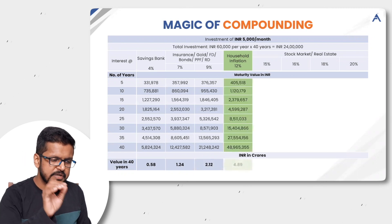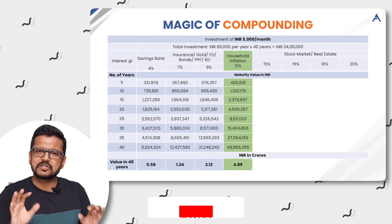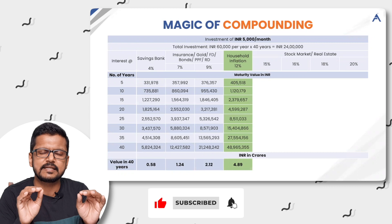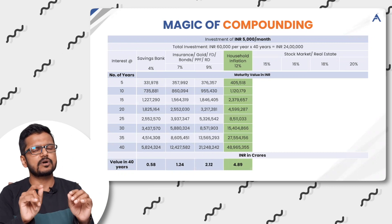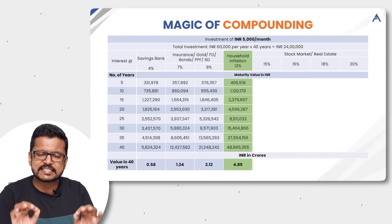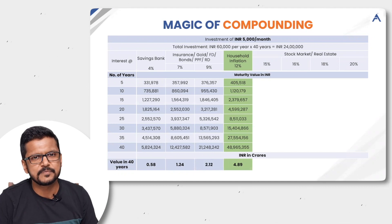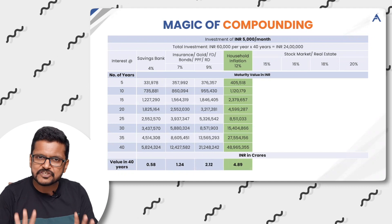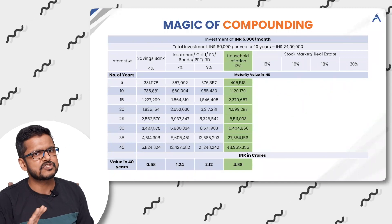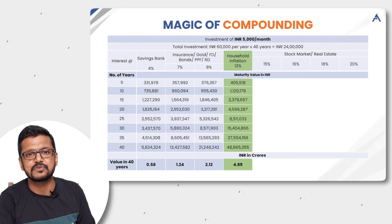But actually what you needed was 4.89 crores. Think about it — any retired couple at the age of 60, if they have around 5 crores worth of assets with them, don't you think their retirement life is sorted? They are financially free. Why? Because they have beaten inflation or been at par with it. That was enough.